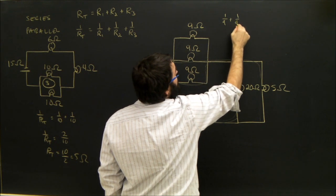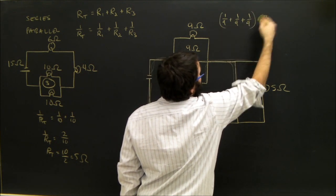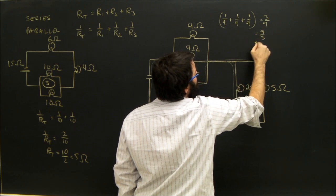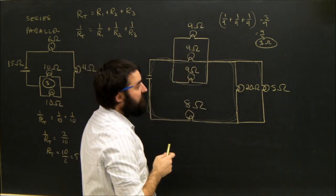1 over 9 plus 1 over 9 plus 1 over 9. Well, that's 3 over 9, but we've got to flip that over. That's 9 over 3. That's 3 ohms. So that's the equivalent or total resistance for this little branch of the circuit.